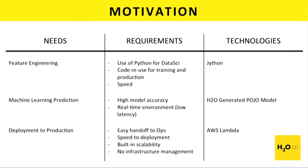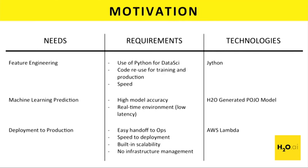He needed to use machine learning predictions — that's why he was using H2O. His requirements were highly accurate models and real-time deployment. He also wanted very smooth deployment to production, rather than a complicated handoff between himself as a data scientist and his DevOps team. He wanted to build the model inside the data science team, turn it into a package, and hand it off to the ops team to deploy. Speed to deployment, easy handoff, built-in scalability, and not having to manage infrastructure were key wins.